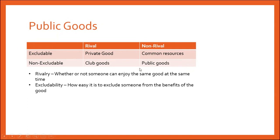Other examples of public goods include certain kinds of broadcasts — radio broadcasts. It's very hard to prevent somebody from receiving the radio if they tune into the right frequency. What's important to note is that when we use the word 'public' here, we are not talking about government-provided. A public good is not necessarily government provided. Governments do tend to provide public goods for reasons we'll talk about in a moment, but not everything a government does is a public good.